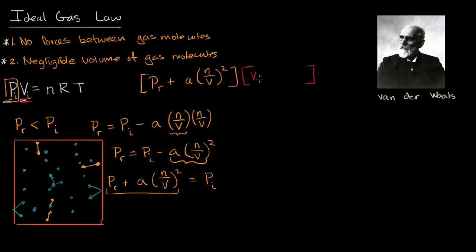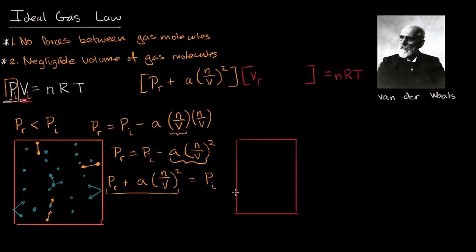Now let's think about how we'd want to adjust real volume relative to ideal volume. Let's draw another container and challenge assumption two — that the molecules' volume is negligible. If we assume the molecules have non-negligible volume, then holding everything else constant, if you want the same pressure, your real volume has to be larger. The real volume V_real needs to be greater than the ideal volume.